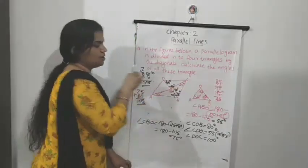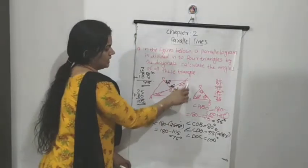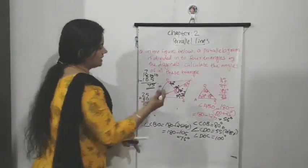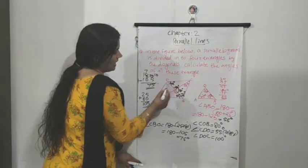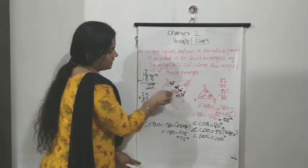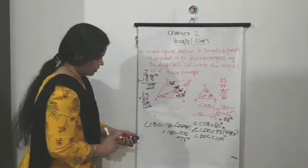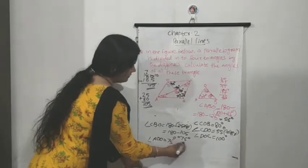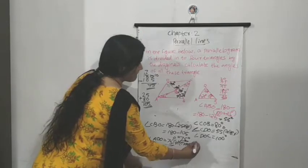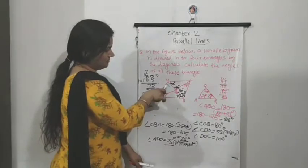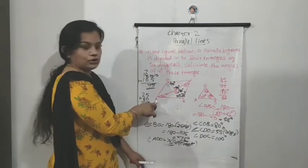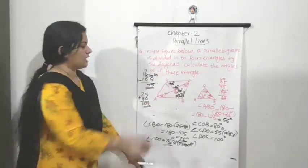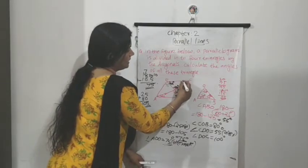The alternate angle of CBO is 75 degrees, so angle ADO is equal to 75 degrees. Similarly, angle A is 25 degrees — that is angle DAB. The alternate angle of DAB is also 25 degrees. These are all alternate angles, and we have now found several more angles.